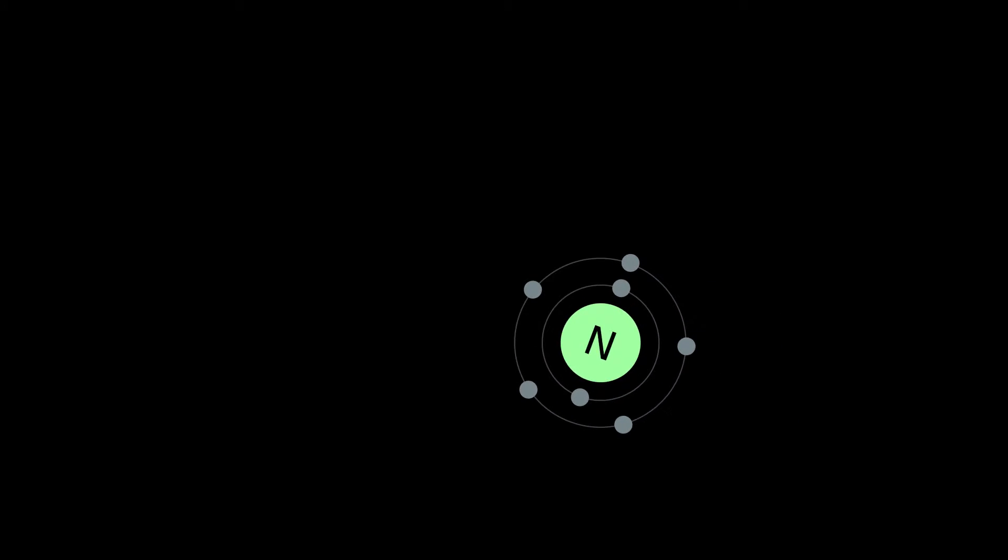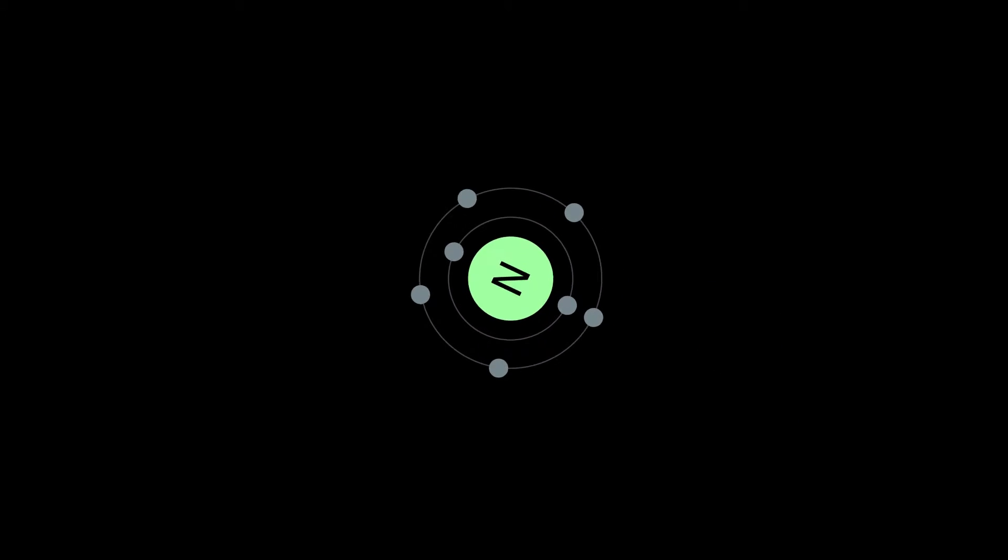Nitrogen is a chemical element with symbol N and atomic number 7. It is the lightest pnictogen, and at room temperature it is a transparent, odorless diatomic gas.